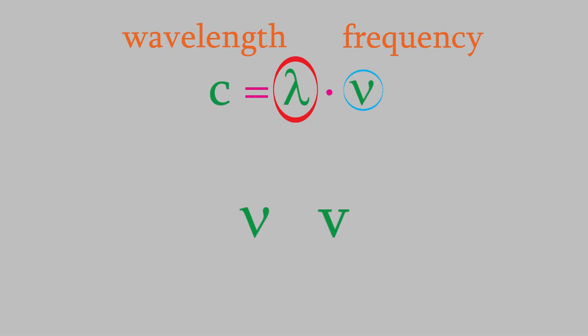We'll see some equations in this chapter that use one or the other of these symbols, and it can be confusing if you mistake a symbol meaning velocity for one meaning frequency or vice versa. You can distinguish them because the symbol nu usually is drawn with curved sides, while the letter v is usually written with straight lines.